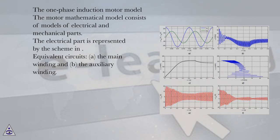The one-phase induction motor model consists of mathematical models of electrical and mechanical parts. The electrical part is represented by the scheme in equivalent circuits: (a) the main winding and (b) the auxiliary winding.